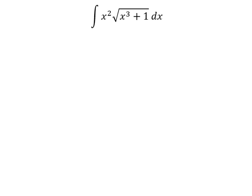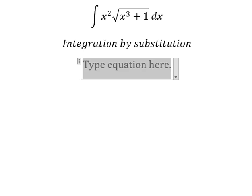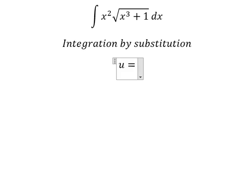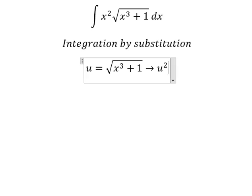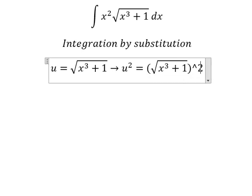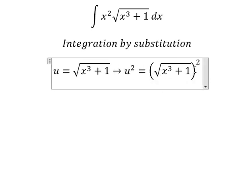We need to use integration by substitution. So I will put u equals to this one. Later that, we put the square for both sides to cancel about the square root.